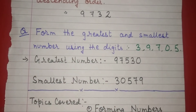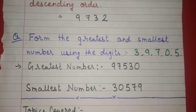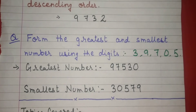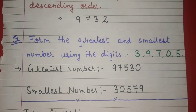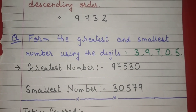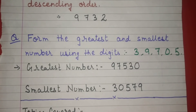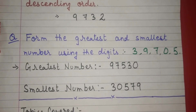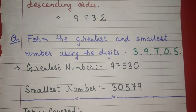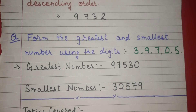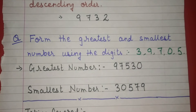Let's solve one question. Form the greatest and smallest number using digits 3, 9, 7, 0, 5. For the greatest number, we write in descending order, so the greatest number will be 97530. For the smallest number, which cannot start from 0, the smallest number will be 30579.